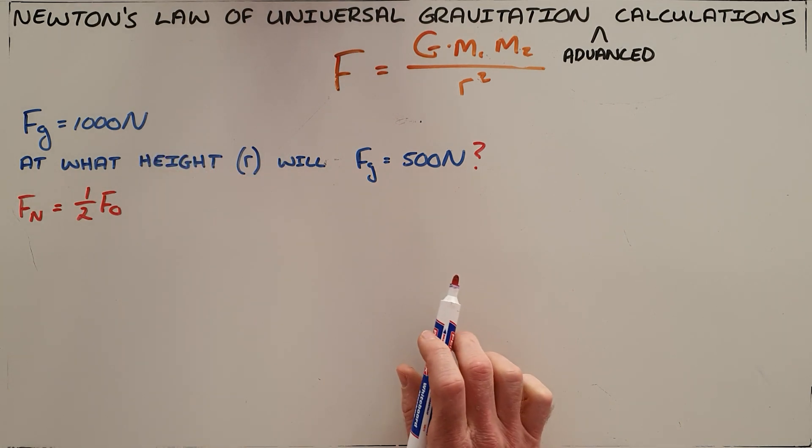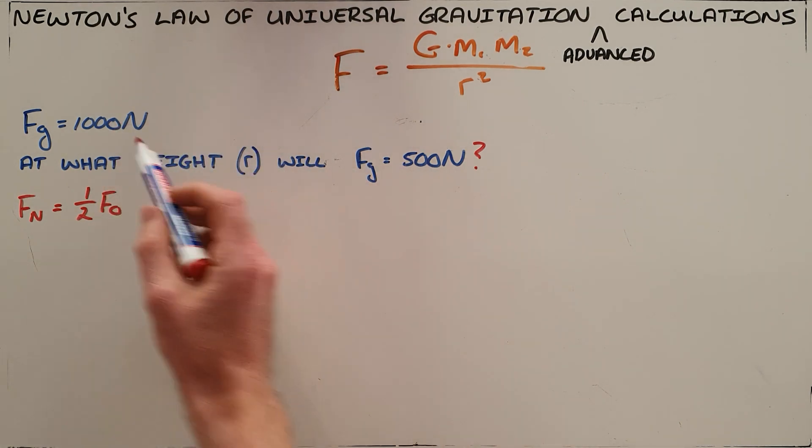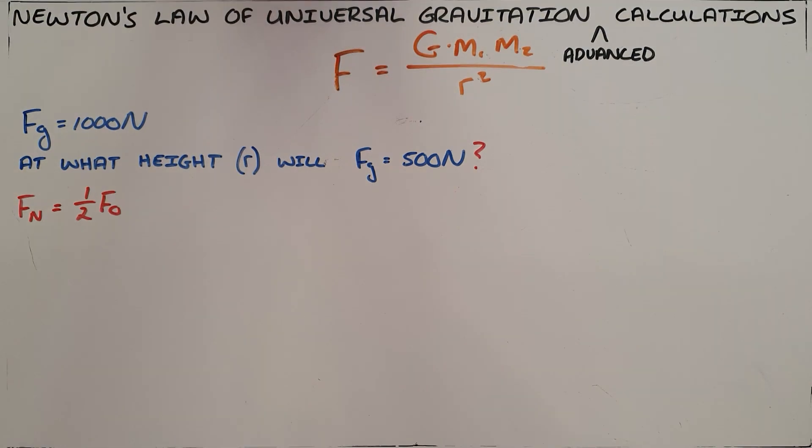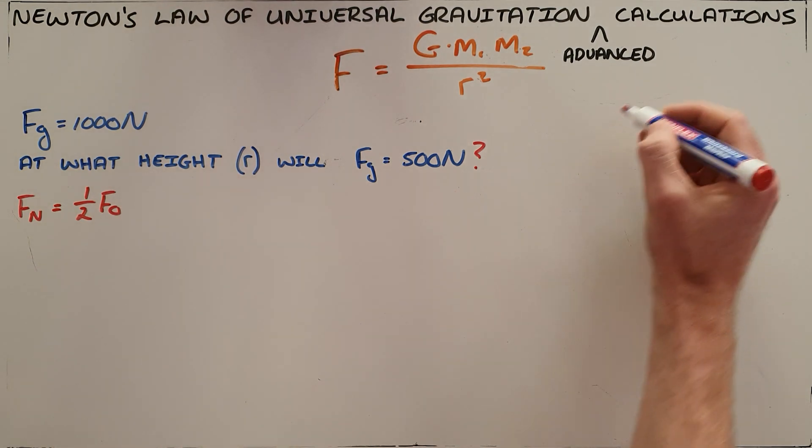500 is one half of 1000, so no matter what numbers you are given, you can convert them into a ratio. In some cases, you will just be given a question where you are asked to calculate the height at which the new force is one half of the original.